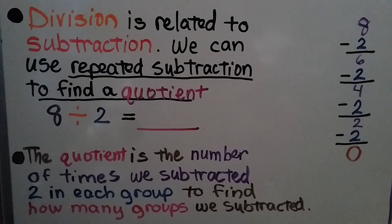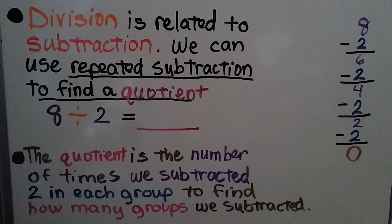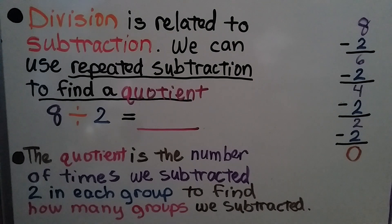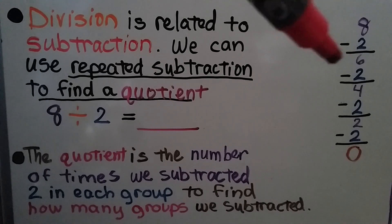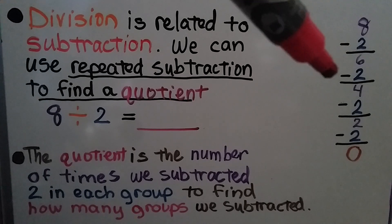Division is related to subtraction. We can use repeated subtraction to find a quotient. We have 8 divided by 2, and we're looking for the quotient. What we can do is start with the dividend 8 and subtract 2. We get 6.